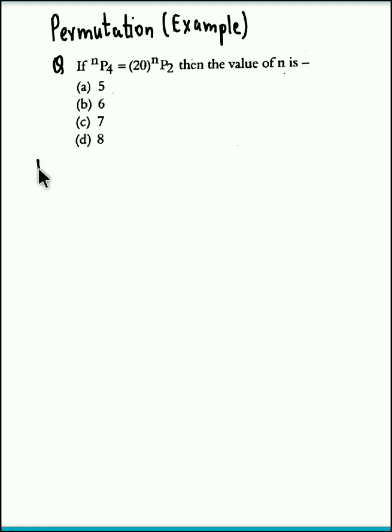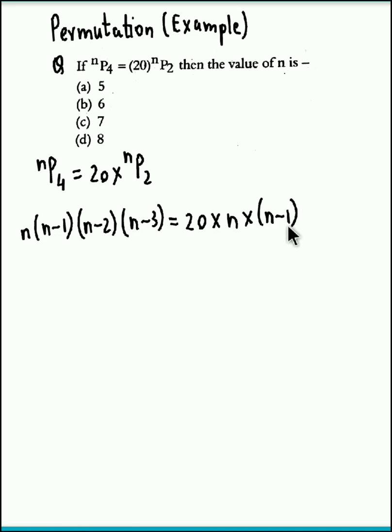Let's get started. nP4 is equal to 20 times nP2. We could write nP4 as n into n minus 1 into n minus 2 into n minus 3, four terms in descending order since there is a 4 out here. This is equal to 20 into, since there is a 2 over here, we write this as n into n minus 1, two terms in descending order.